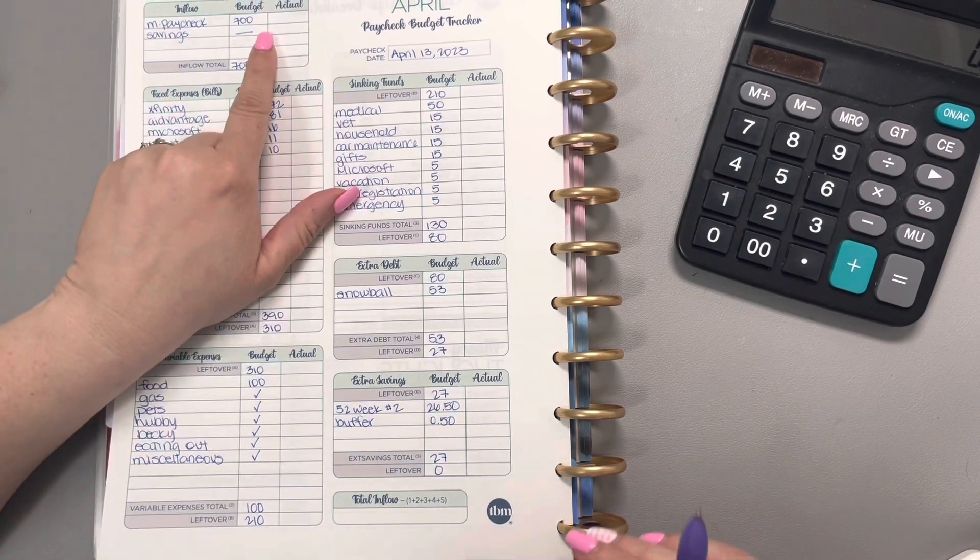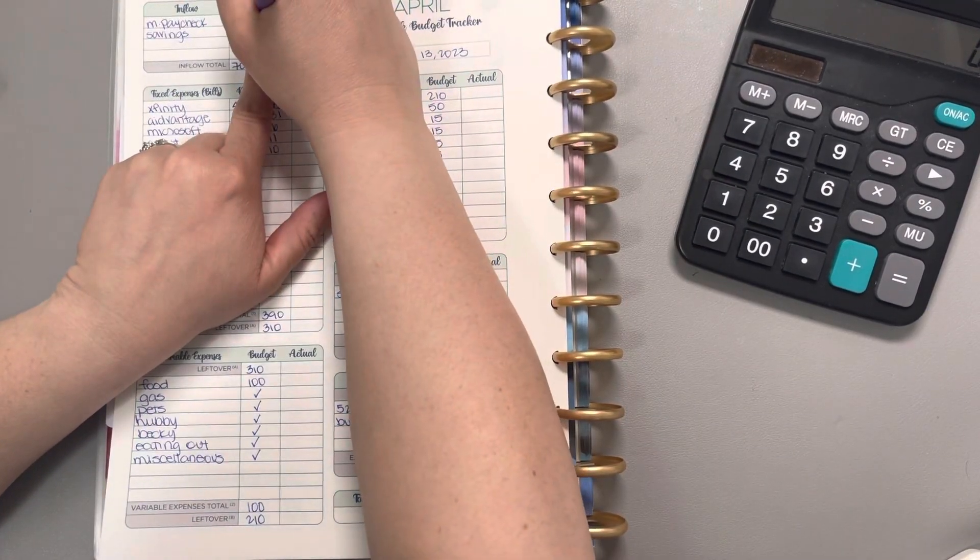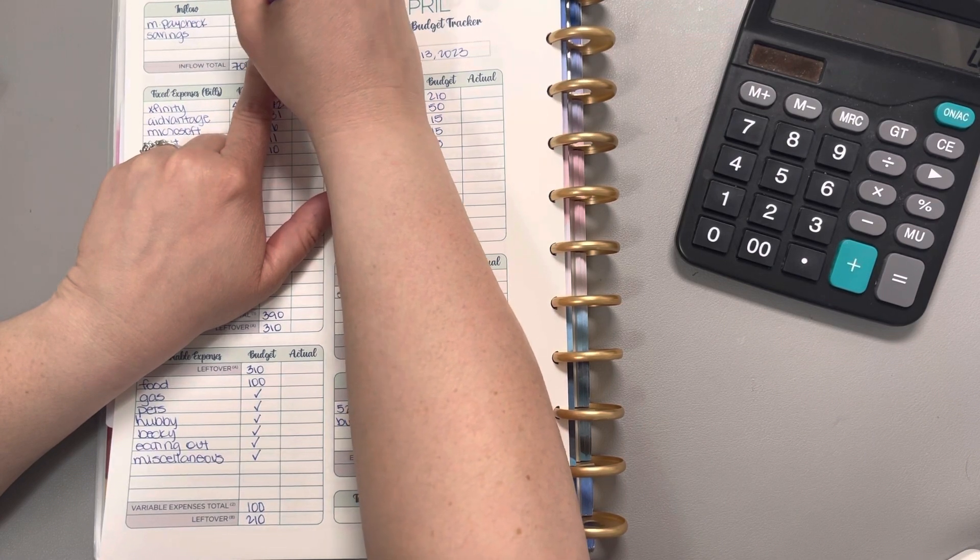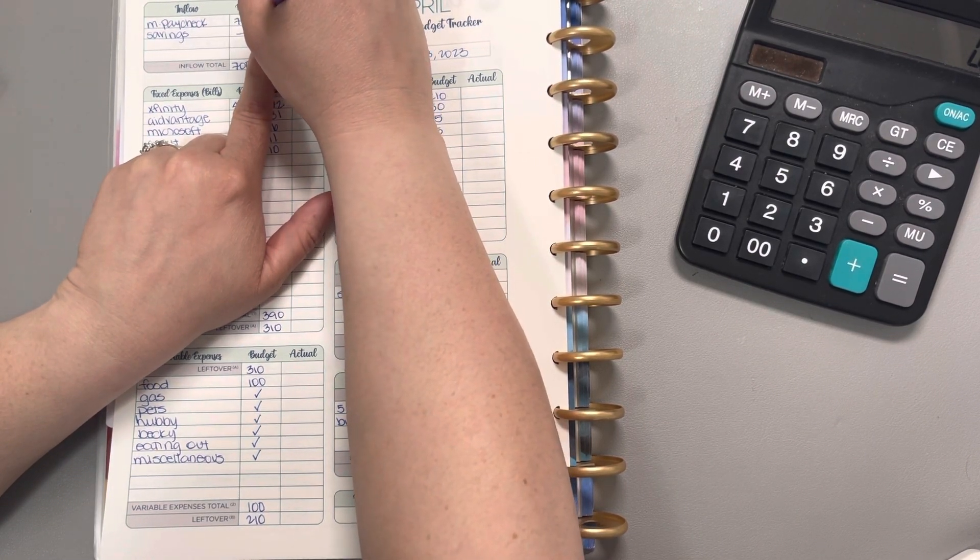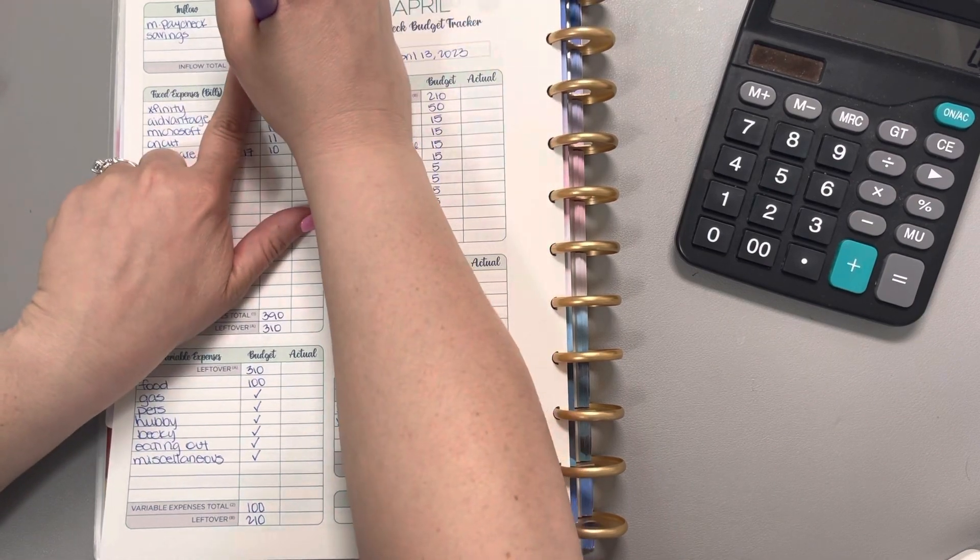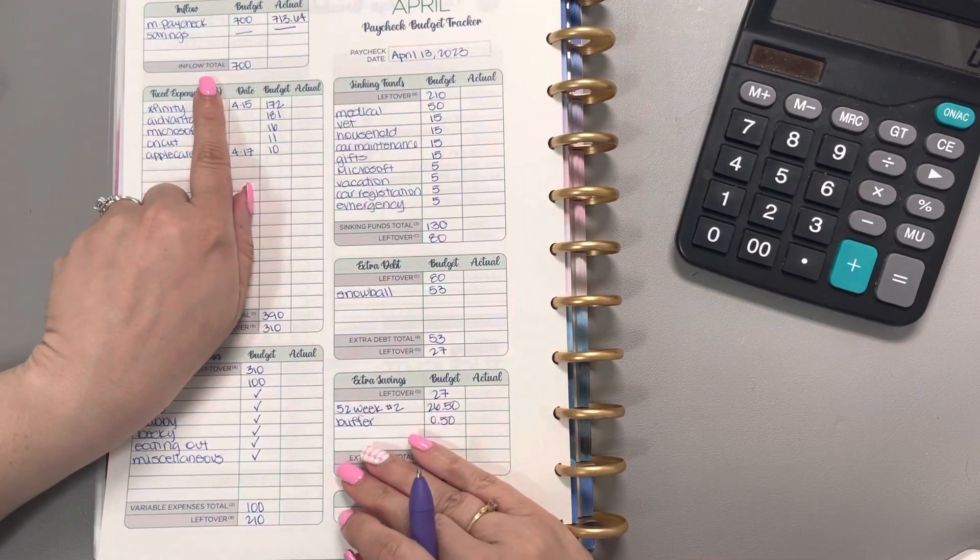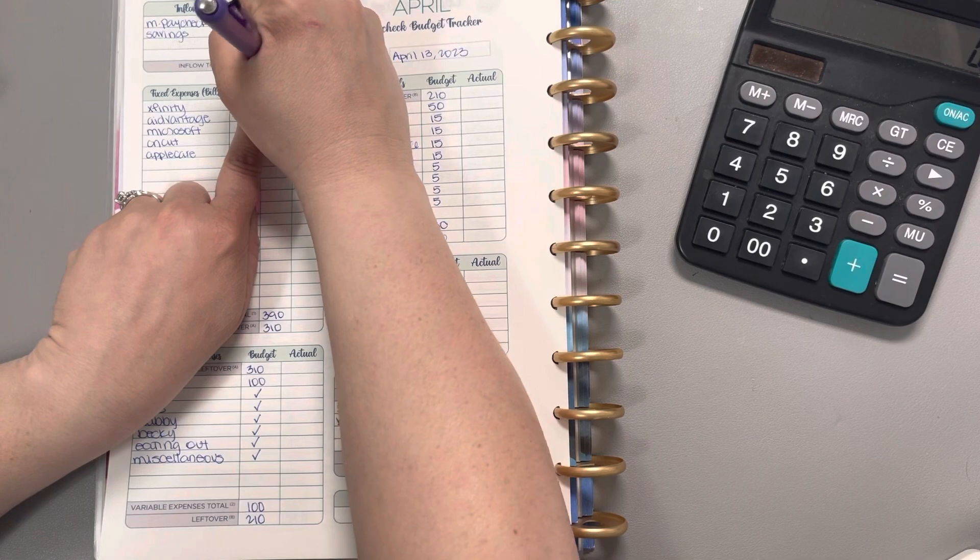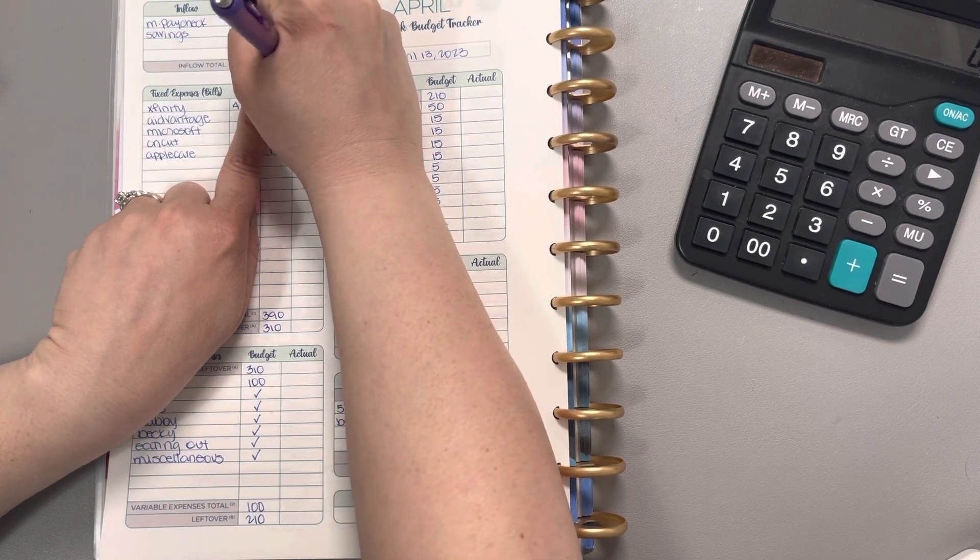He brought in $713.64. We did not use anything from savings, which means our inflow total was $713.64.